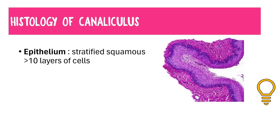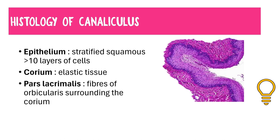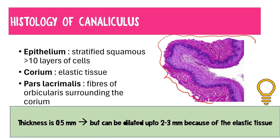Regarding the histology of the canaliculi: they have a stratified squamous epithelium of more than 10 cell layers, surrounded by elastic tissue called the corium, which is in turn surrounded by fibers of the orbicularis muscle. An important clinical point: although the diameter of the canaliculus is about 0.5 mm, during probing we can use dilators or probes of about 2–3 mm in diameter. This is possible because of the elastic tissue (corium) in the walls, which allows dilation from 0.5 mm up to 2–3 mm.